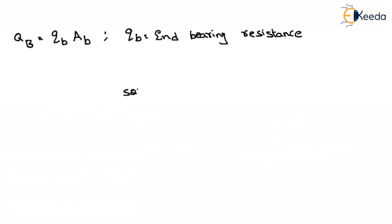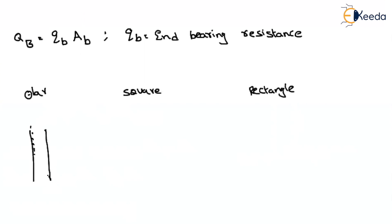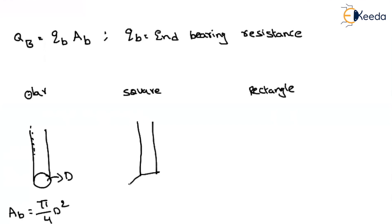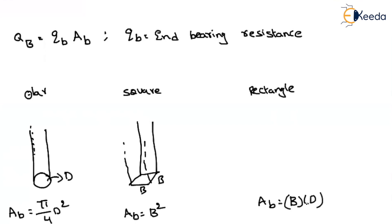In general, we have square piles, circular piles, and rectangular piles. For a circular pile, the end bearing area is pi/4 × D². For a square pile, if each side is B, the end bearing area is B². For a rectangle pile, the end bearing area is D₁ × D₂. Here AB is the end bearing area, depending upon the pile dimensions.